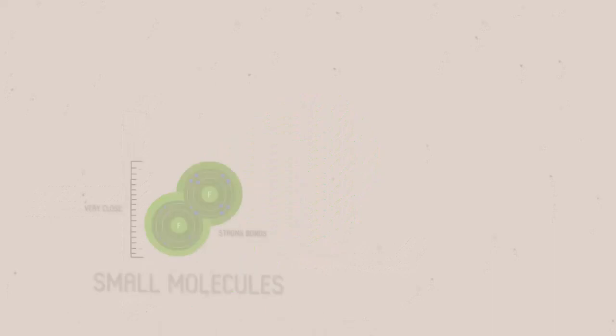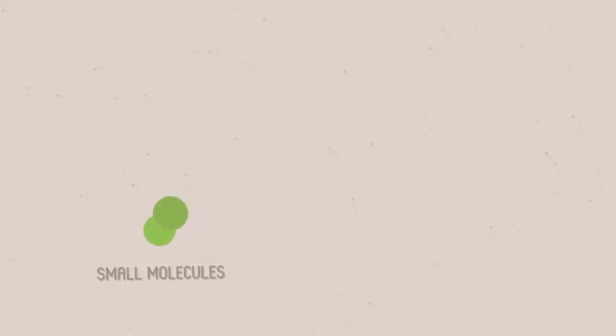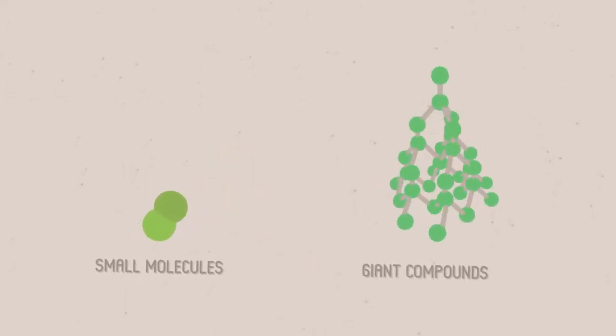There are two kinds of covalent structure. Small molecules, like water, and giant compounds, like diamond.